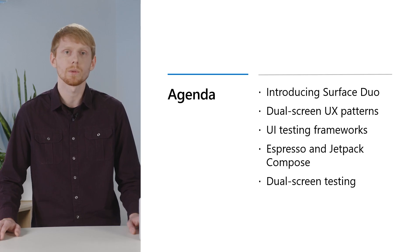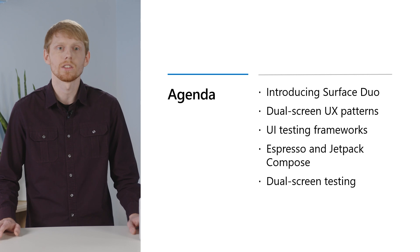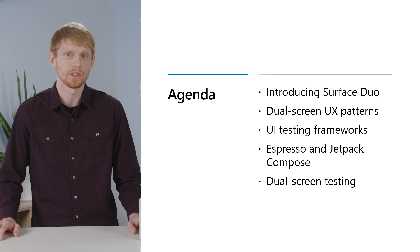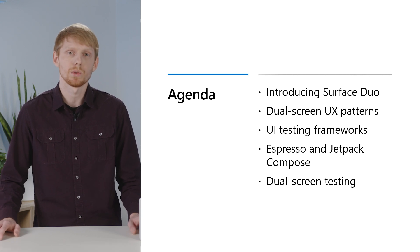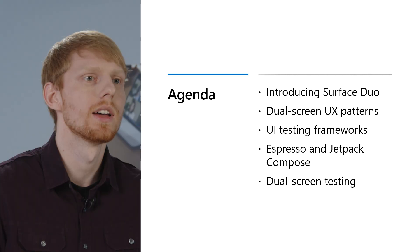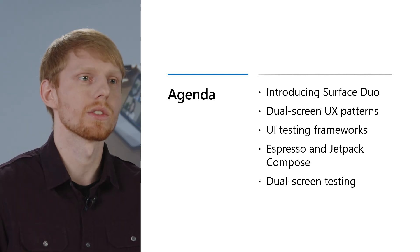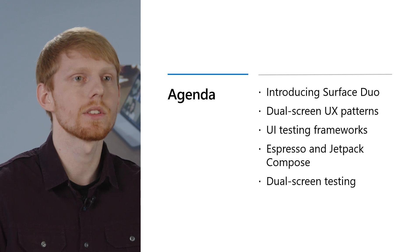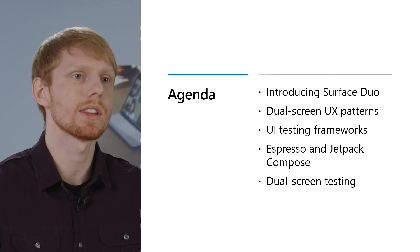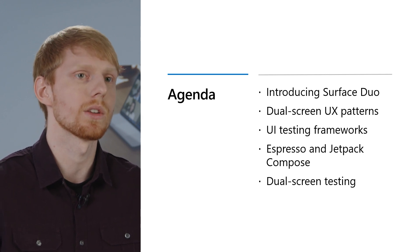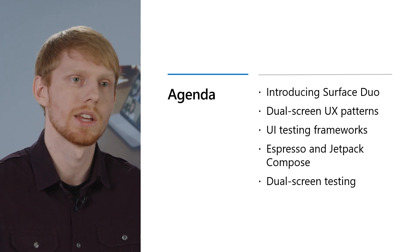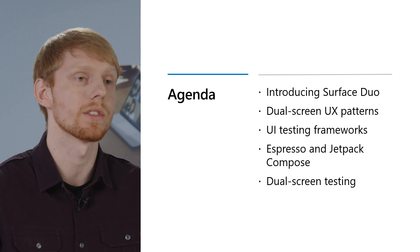To put this all in context, first I want to introduce the Surface Duo, and then talk a little about test frameworks and how to write tests for an arbitrary screen, regardless of the type of device. Then we'll look at additional considerations for testing dual screen and foldable devices. Finally, we'll bring the pieces together to write a UI test that evaluates if a dual screen feature is working as intended. By using these techniques, you can confidently enhance your Android apps with foldable features and rely on your CI system to ensure that each new release continues to work well, without lots of tedious manual testing on a variety of devices.